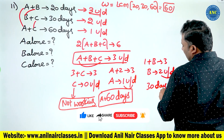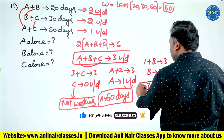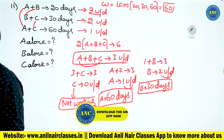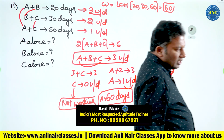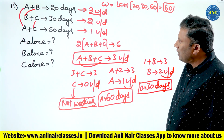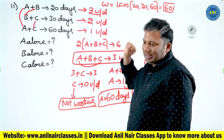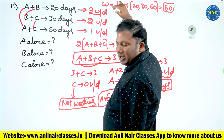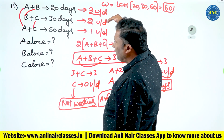B can complete the work in 30 days. This is a very important model. Convert days into units per day using LCM of 20, 30, and 60, which is 60 units. A plus B = three units per day, B plus C = two units per day, A plus C = one unit per day.